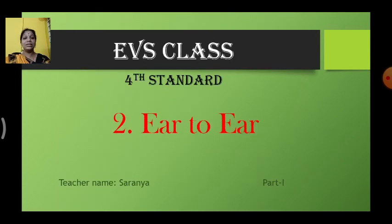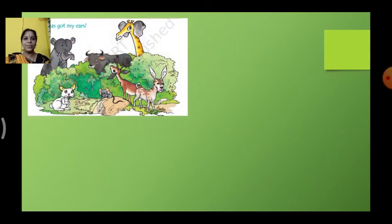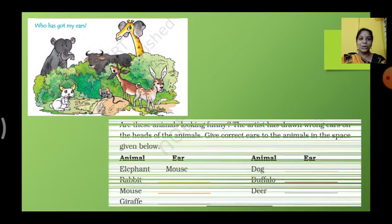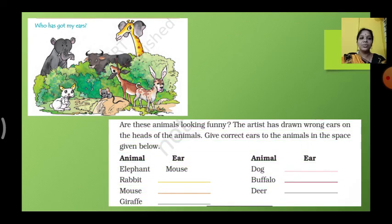The next lesson is ear to ear. We will see what is that. See the picture here. The animals are looking funny right. The artists have drawn wrong ears on the heads of the animals. Give correct ears to the animals in the space given below.